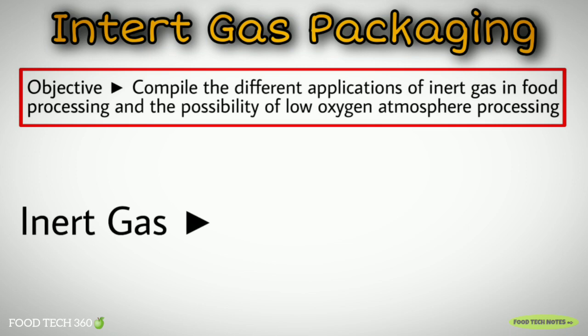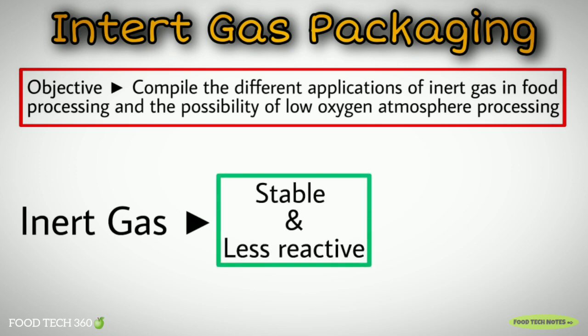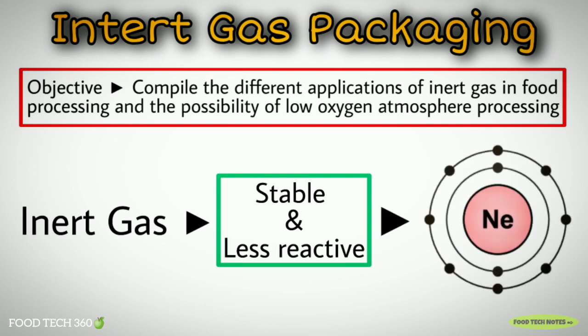Inert gases are so stable and react so little because, unusually for elements, the number of electrons in the outer part of the atom completely fills the shell.